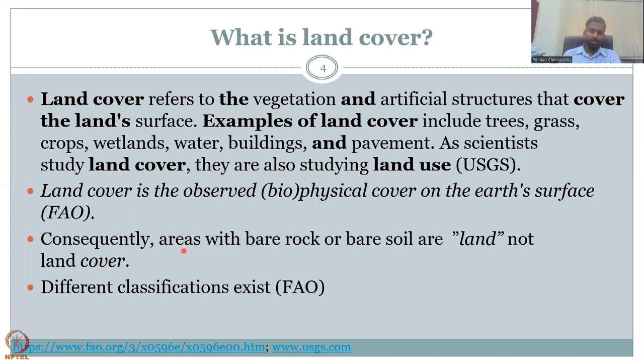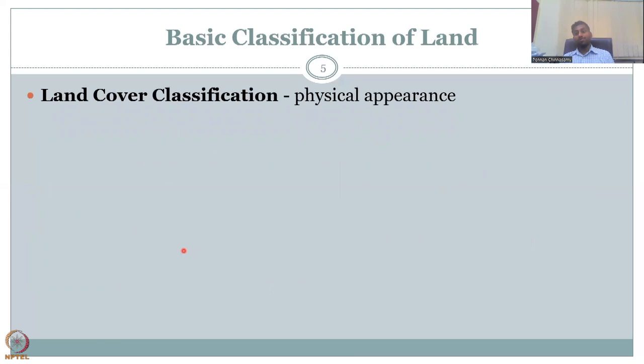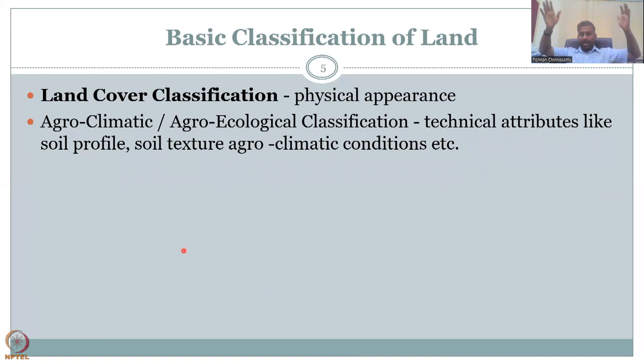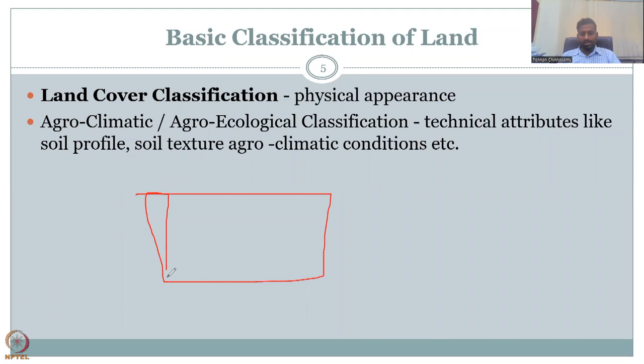There are different classification systems that exist, which is a concern. FAO gives one classification scheme, but there are multiple different classification techniques. The basic classification of land cover is by physical appearance — you go to a place, observe the land cover, mark it, and then grid the land just as we did with rasters.